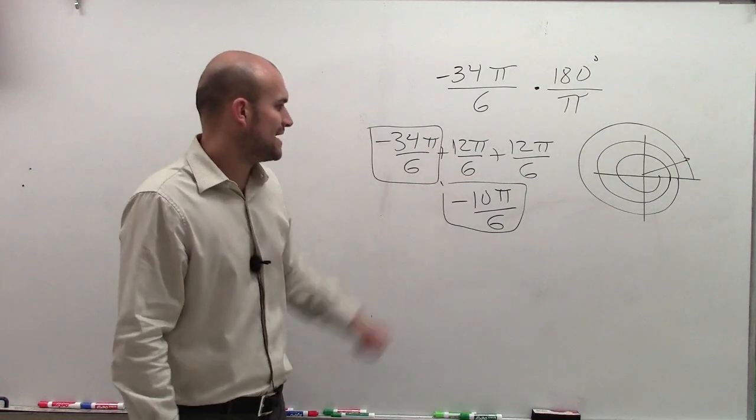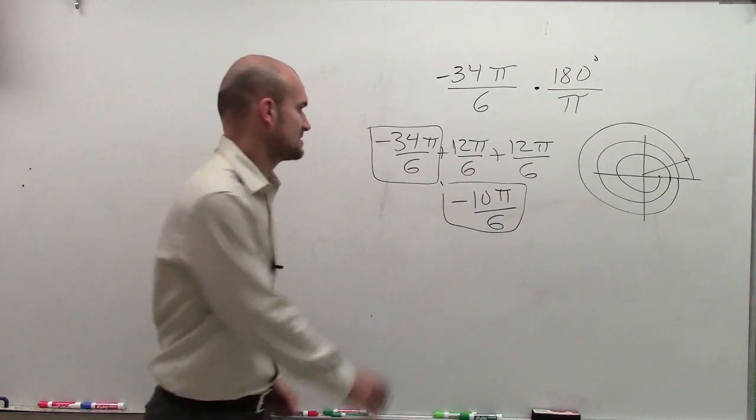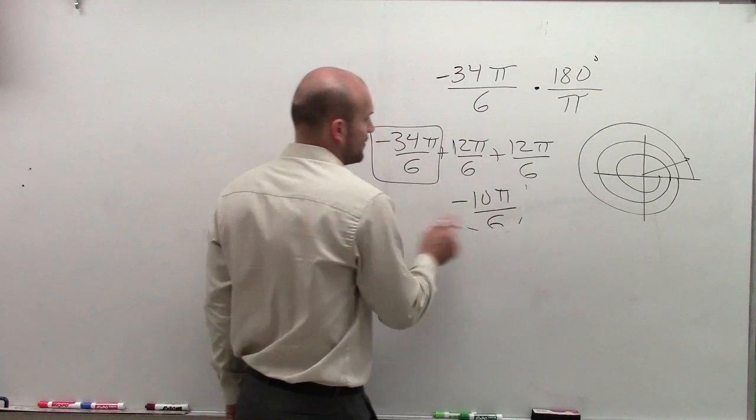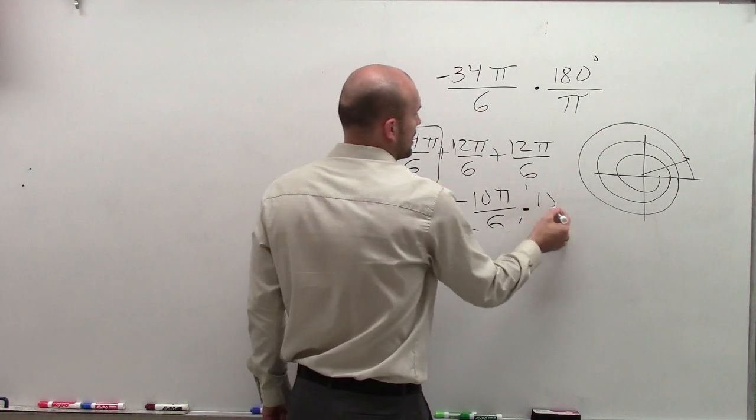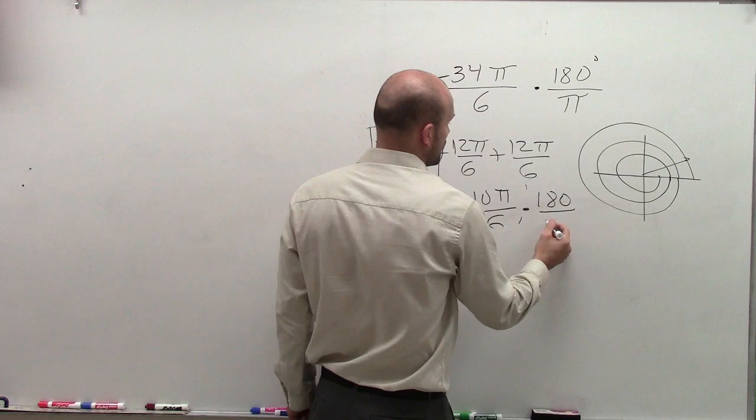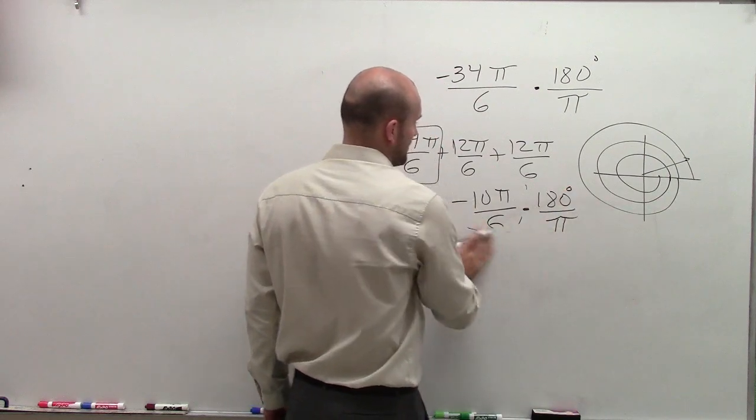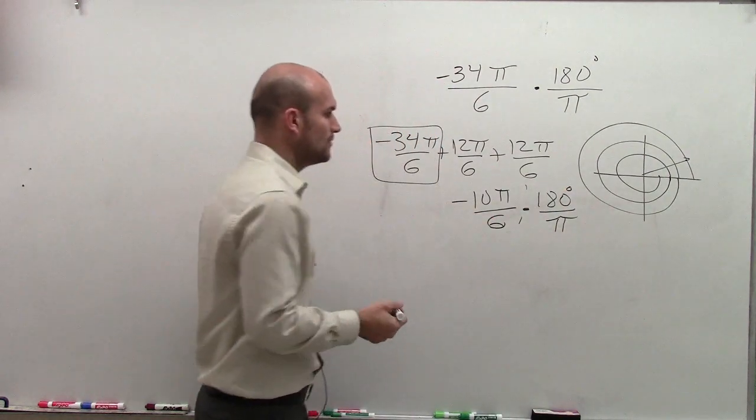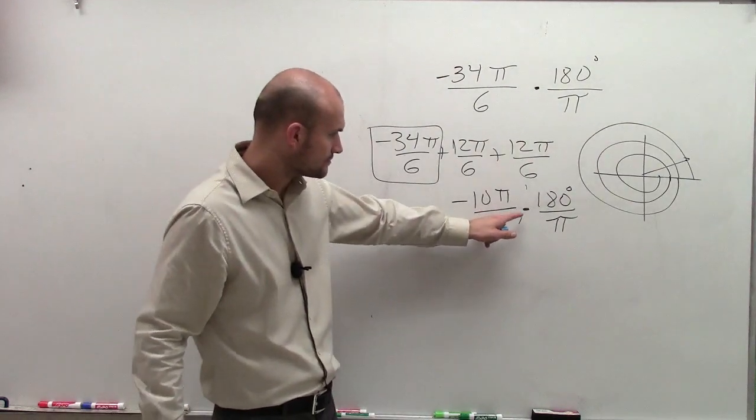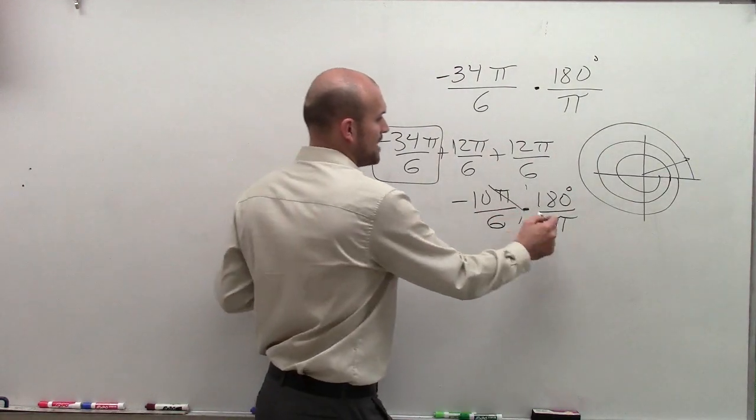So now I have my answer negative 10π over 6. It's a little bit easier now to multiply this by 180 degrees divided by π, because now when I look at this, I can cancel out my π's.